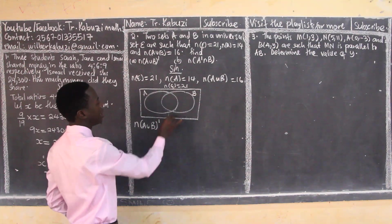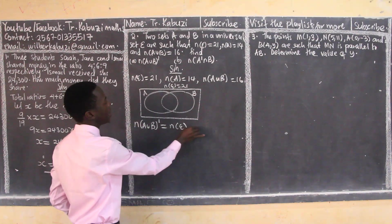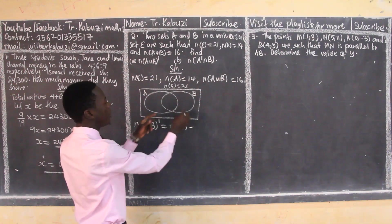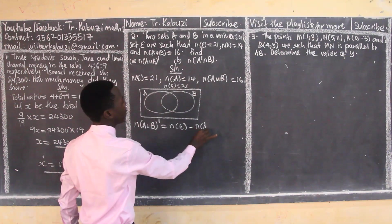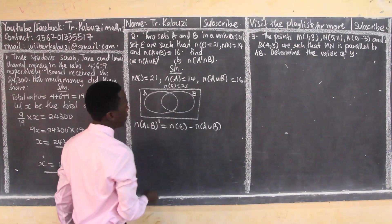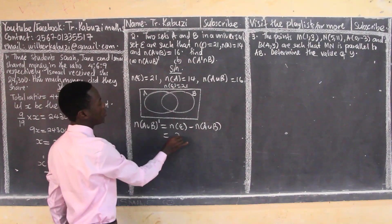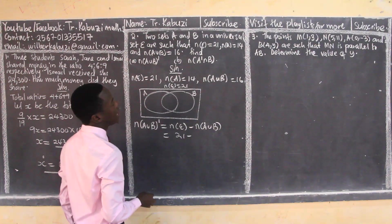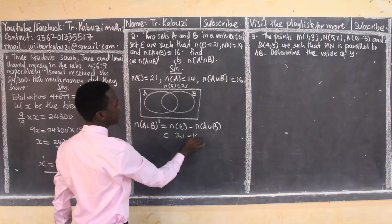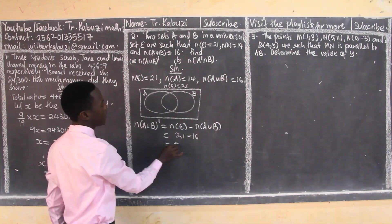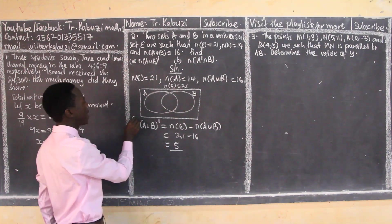Number of A union B complement, we shall get the universal minus the union. My universal is 21 minus the union which is 16, and this gives me 5. So this is my part A.